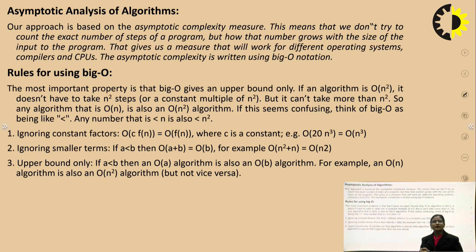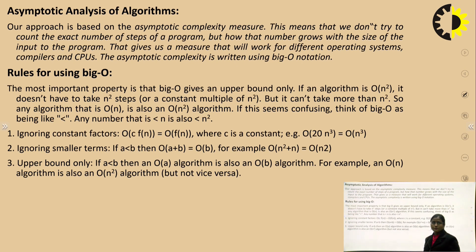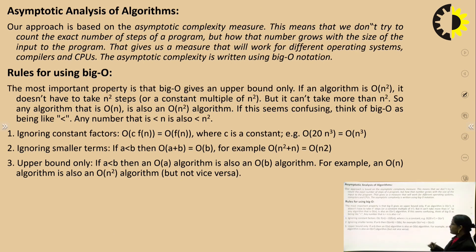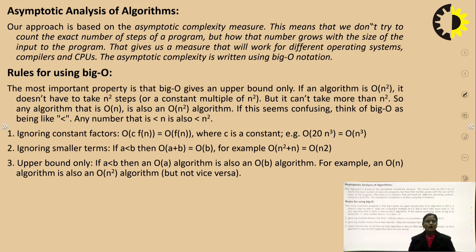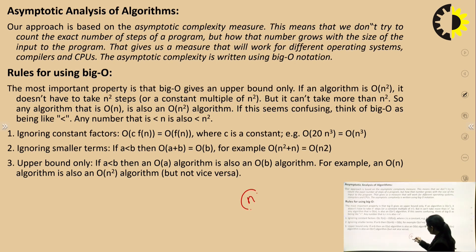Asymptotic complexity gives us a measure that works across different operating systems, compilers, and CPUs, and is written using Big O notation. The most important property is that Big O gives an upper bound only. If an algorithm is O(n²), it does not have to take n² steps, but it cannot take more than n² steps.